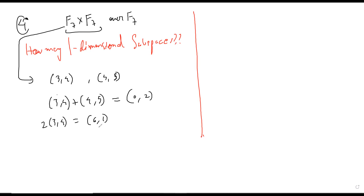Inverses exist, right? The inverse for two would be four, right? So if you multiply by four, then two times four is eight, which becomes one. So this kind of thing — everything happens mod seven.